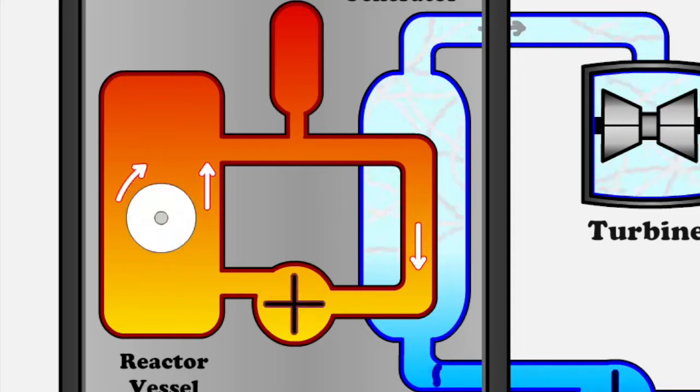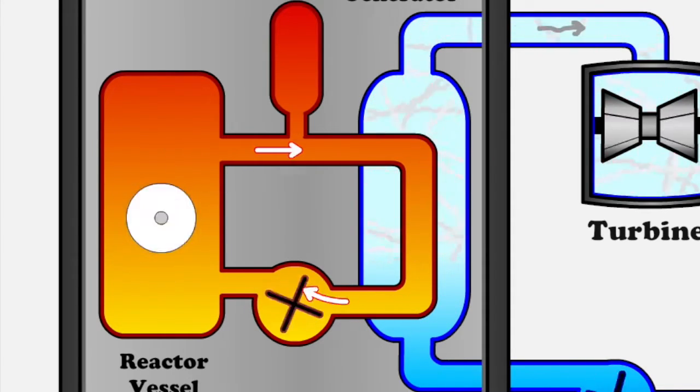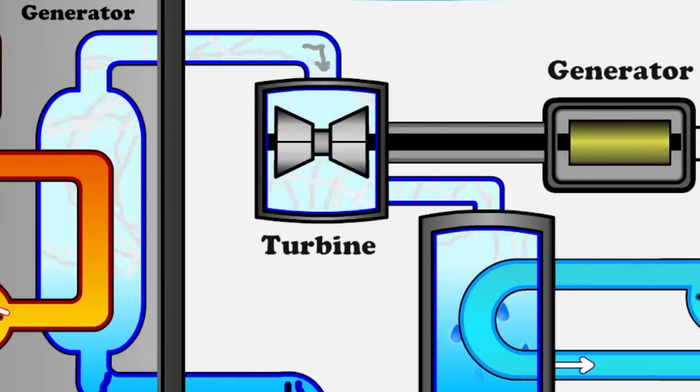High pressure water circulates around the reactor absorbing emitted radiations, transforming them to heat. This heated water now circulates through a steam generator producing steam to power a turbo generator.